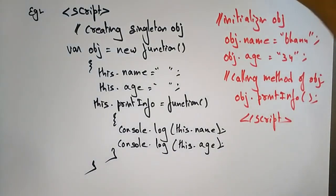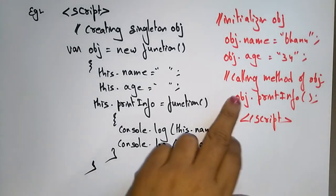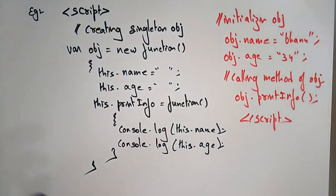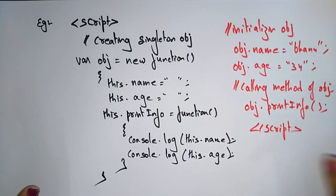So this is how you create a Singleton object. This Singleton object returns a unique instance and is responsible for creating and managing the instance object. Thank you.